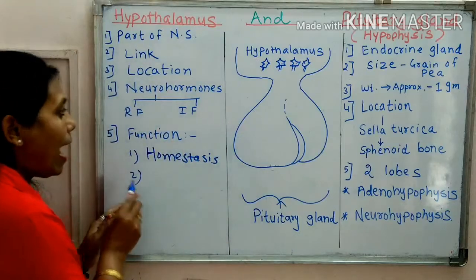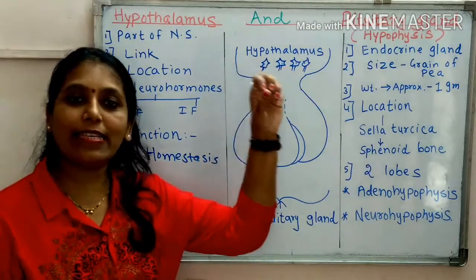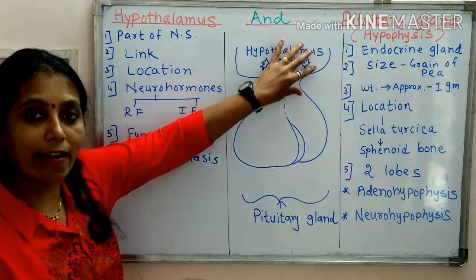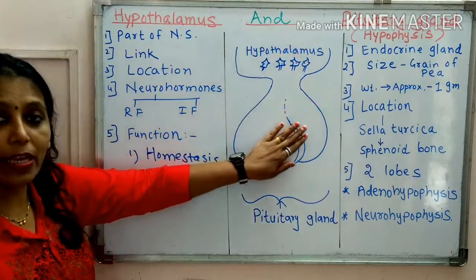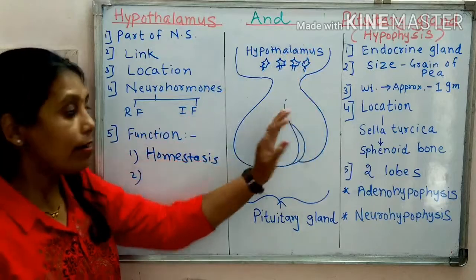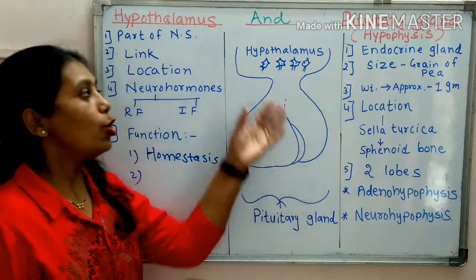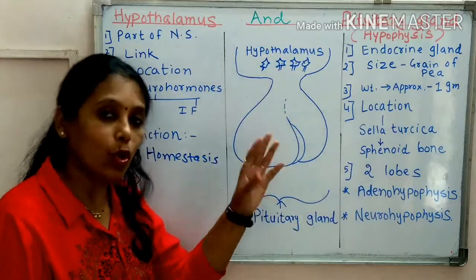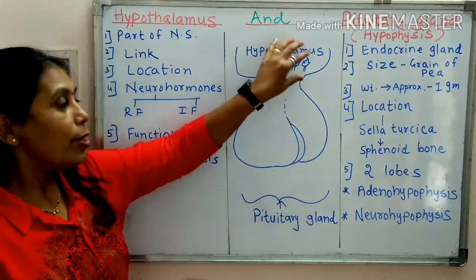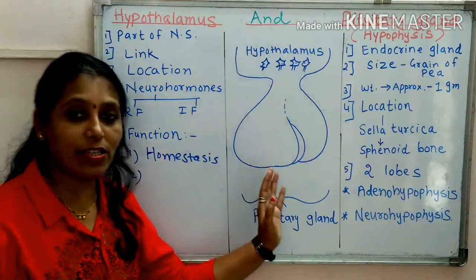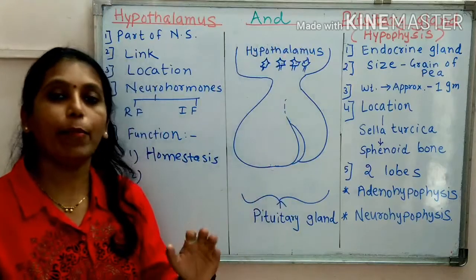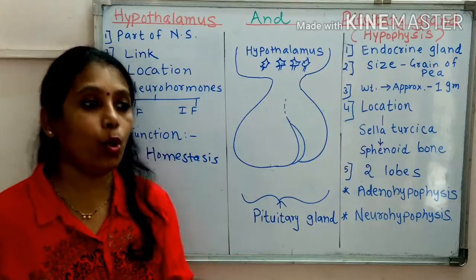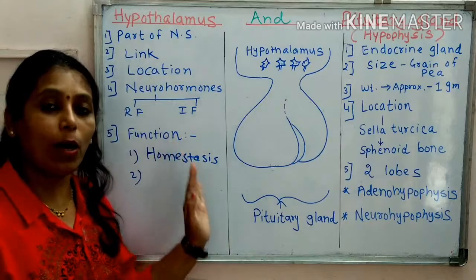Second function: as mentioned, hypothalamus secretes releasing factors and inhibiting factors. These factors are released into the blood and they reach the pituitary gland. So hypothalamus controls the pituitary gland — in other words, the neurohormones are secreted and they reach the pituitary gland so that the pituitary gland becomes active and starts secreting its own hormones.